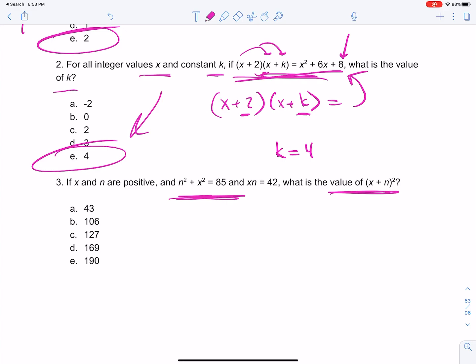Now, we get to the best one of the set. So here's what we have. n squared plus x squared is 85. And it says xn is 42, right? And it's asking for this. Now, what people do for this one is they like to try to figure out to solve for x, solve for n. Let me go through that. How do I solve this? No.